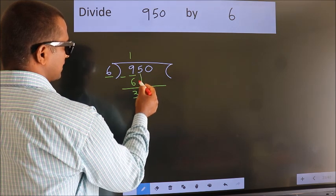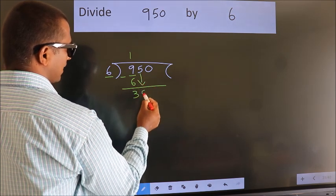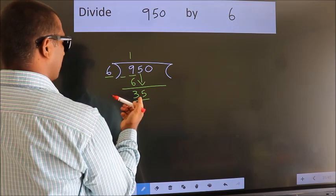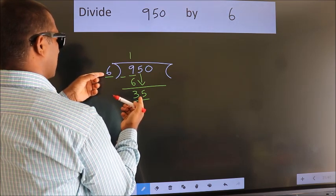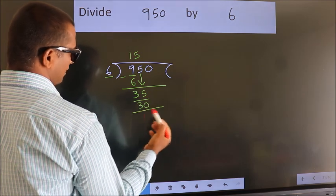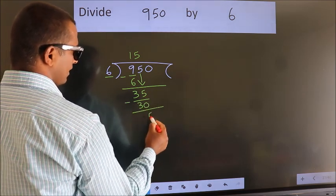After this, bring down the beside number. 5 down, so 35. A number close to 35 in the 6 table is 6 fives 30. Now we subtract. We get 5.